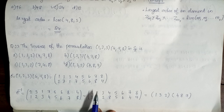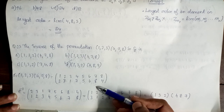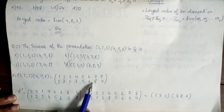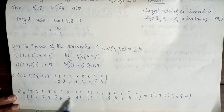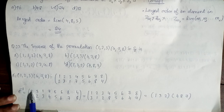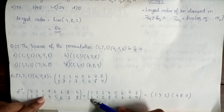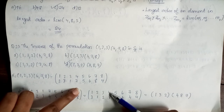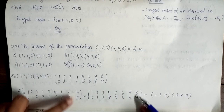So the inverse is: 1 maps to 3, 2 maps to 1, 3 maps to 2, 4 maps to 8, 5 maps to 5, 6 maps to 6, 7 maps to 4, and 8 maps to 7.